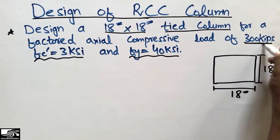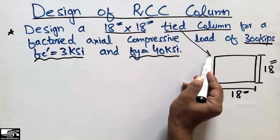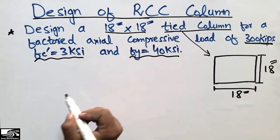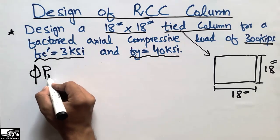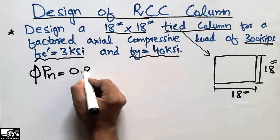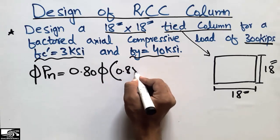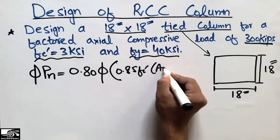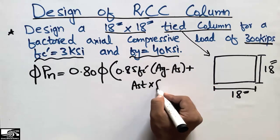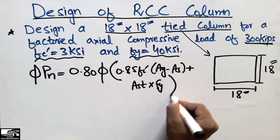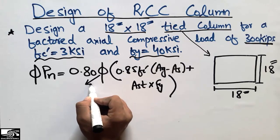Since this is a tied column, not a spiral or circular column, we will use tied column properties. To start the design, we need the nominal strength formula: φPn = 0.80 × φ × [0.85 × f'c × (Ag − As) + As × fy]. The φ here is the strength reduction factor.